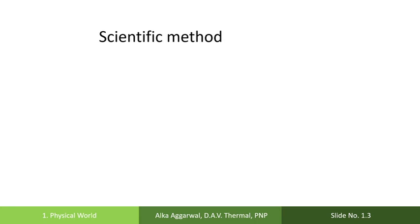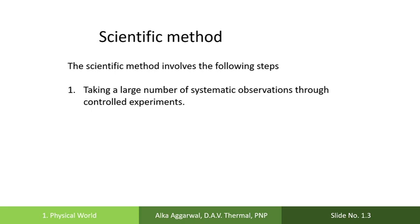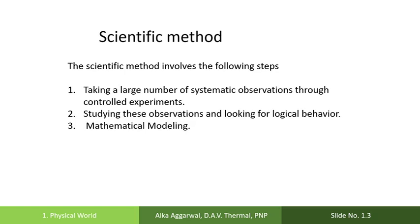Scientific method is the step-by-step approach used by a scientist in studying natural phenomena and establishing laws which govern these phenomena. The scientific method involves the following steps: Number one is taking a large number of systematic observations through controlled experiments. Number two is studying these observations and looking for their logical behavior based on qualitative and quantitative reasoning. Number three is mathematical modeling.